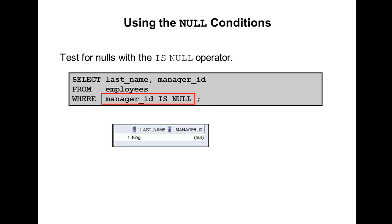I'm going to explain how to compare null conditions. Before that, let me explain what null is. Null means unavailable or undefined. Null is not equal to space, not equal to zero, and null is not even equal to null. To identify or search for null in Oracle, there is one operator called IS NULL.